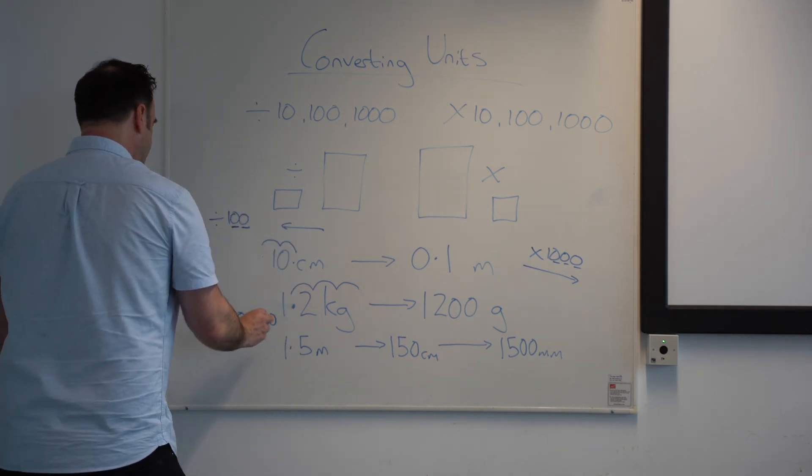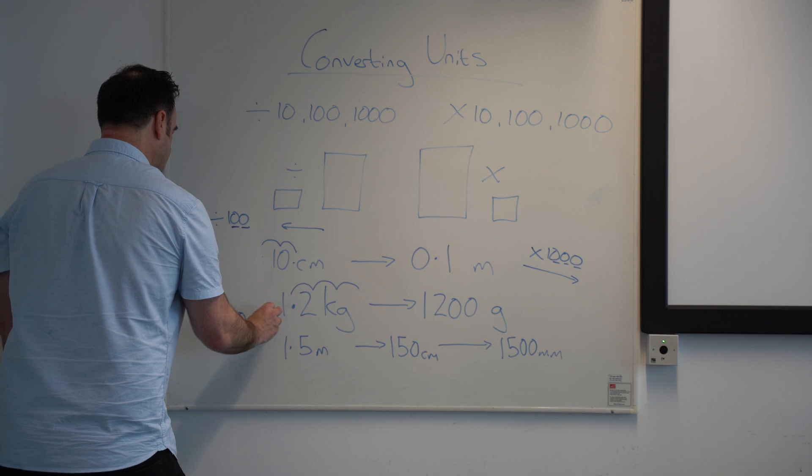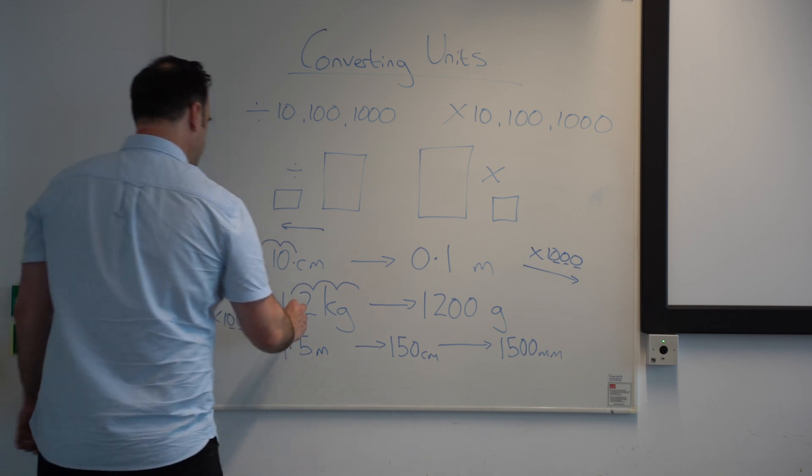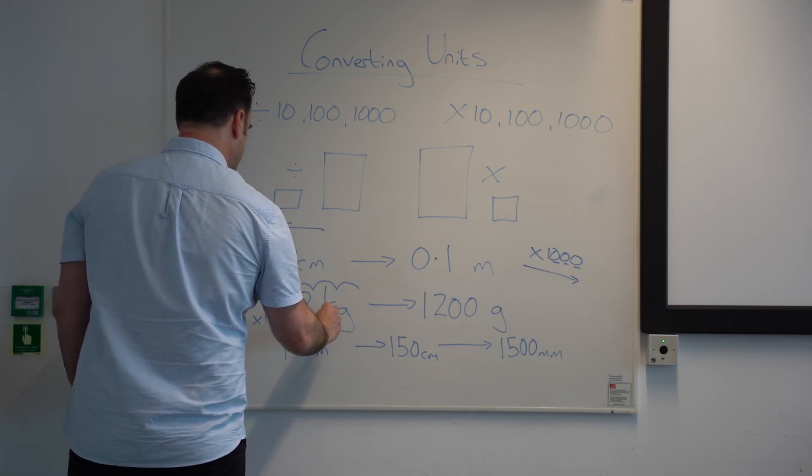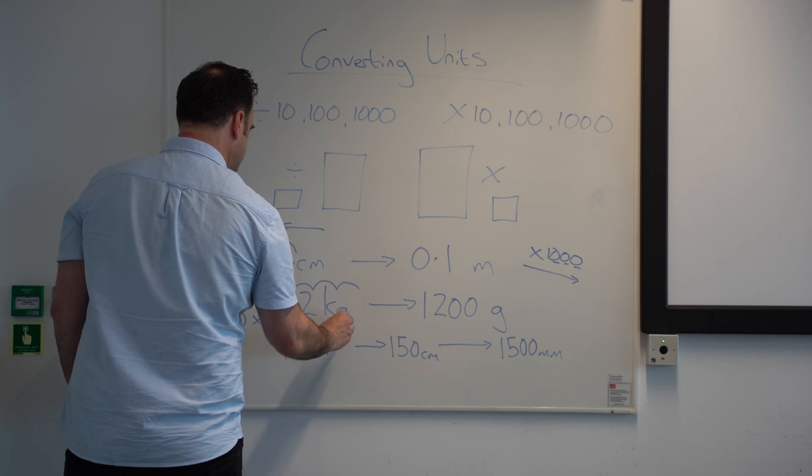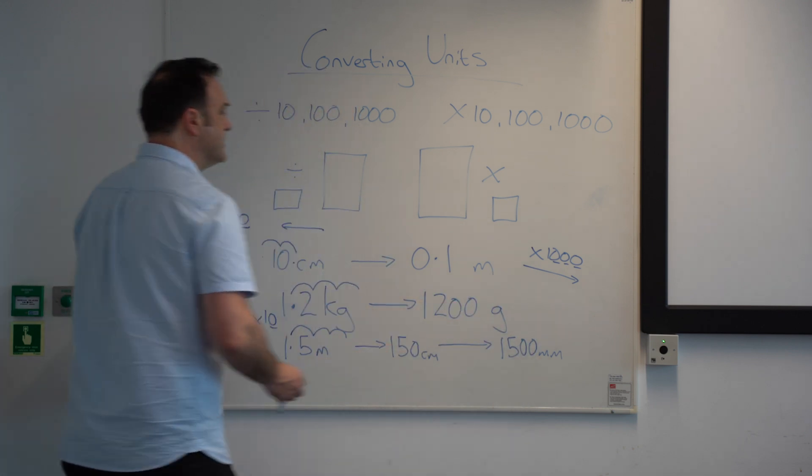So what you're actually doing is doing three jumps in total. So, we go one, two, three, run out of numbers, zero, zero, 1,500 millimetres.